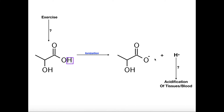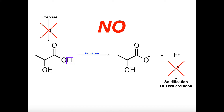Lactate has simply lost that hydrogen ion and therefore this oxygen develops a negative charge. It turns out that while there are some things in here that are true — for example, if we have lactic acid it could dissociate into lactate and a hydrogen ion, and hydrogen ions do in fact acidify solutions like the blood or tissues — this process does not actually happen. When you exercise at high intensities you don't actually directly produce lactic acid.